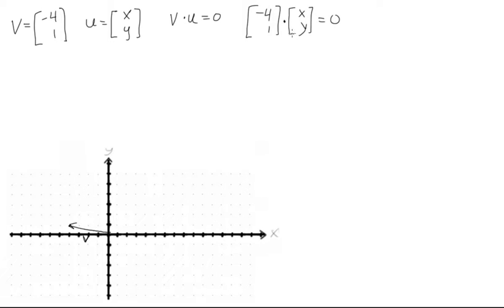So when we work this out we find out that, well multiply the first terms and add them to the second terms that are multiplied together, we would get negative 4x plus y is equal to 0. And now if we just want to solve for one of these variables we can solve for y, and if we add 4x to both sides we get y is equal to 4x.